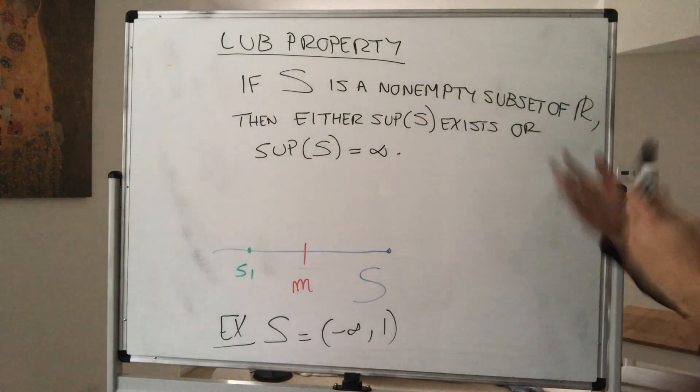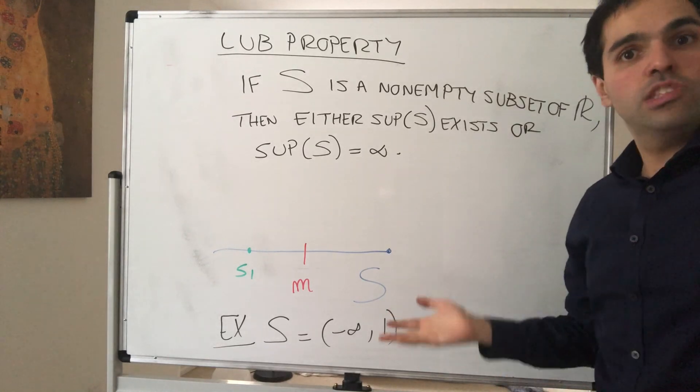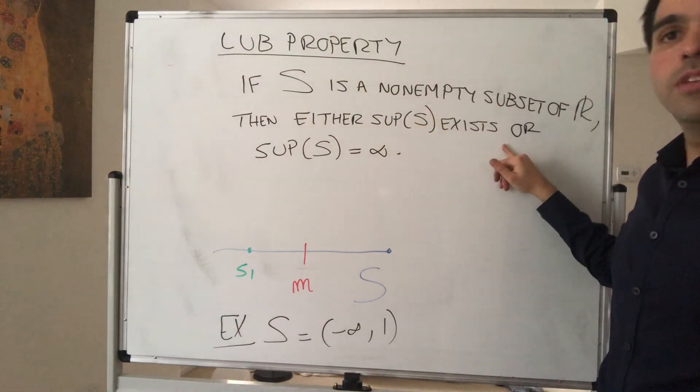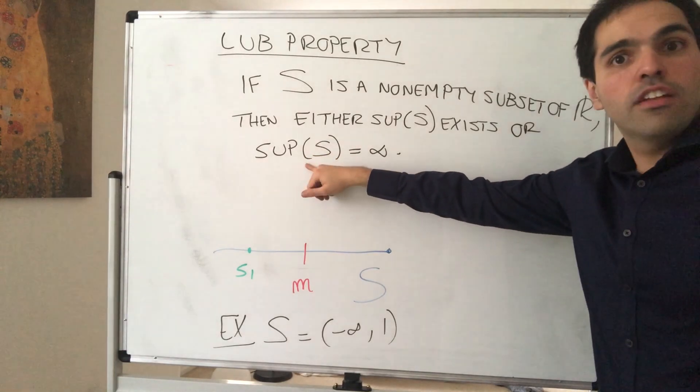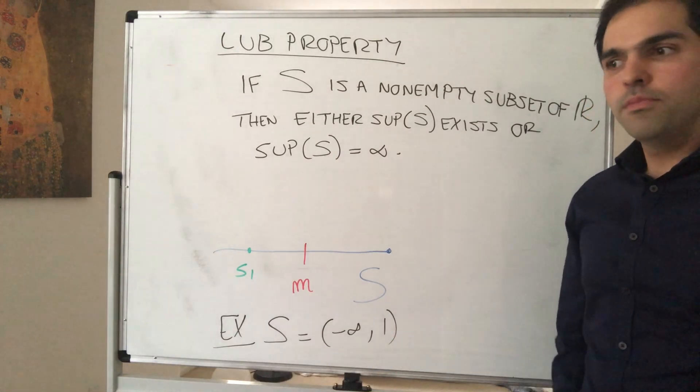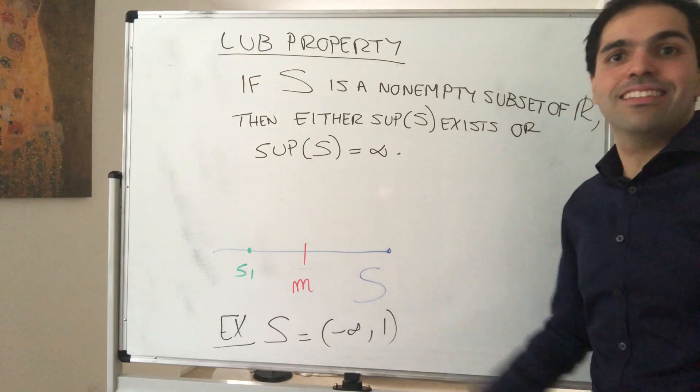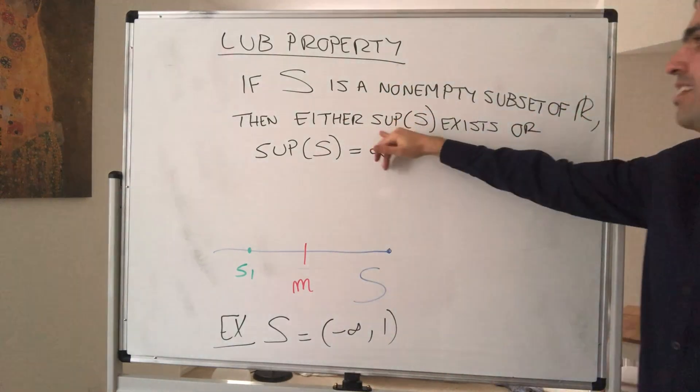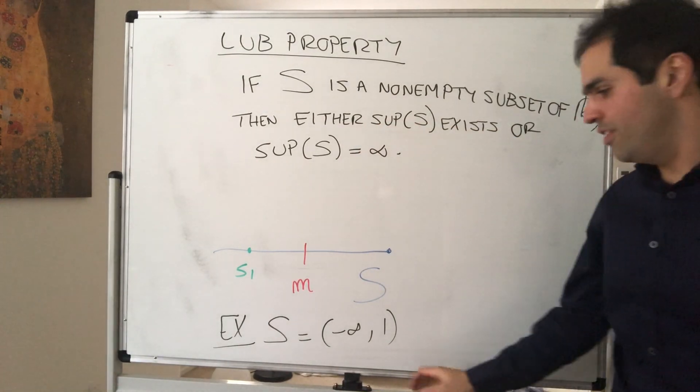And again, why is that true? Suppose S is a non-empty subset of R. Case one, it's bounded from above, therefore the supremum exists. Or it's not bounded from above, and therefore by definition the supremum is infinity. So for you, if for you infinity exists, then you could just say that the supremum always exists. But strictly speaking, it either exists as a real number or the supremum is infinity.